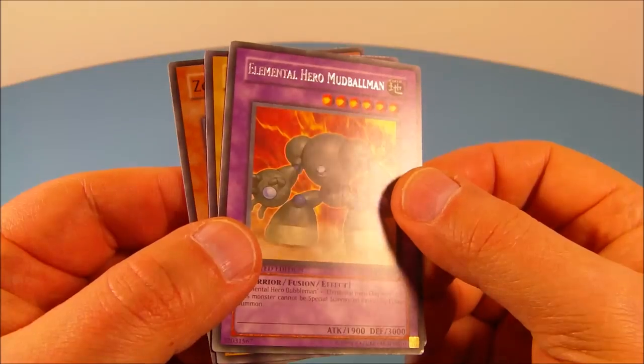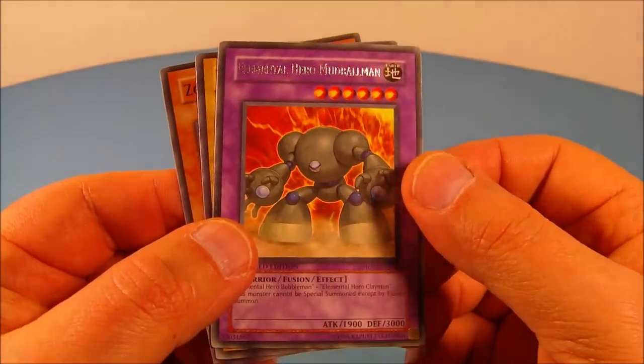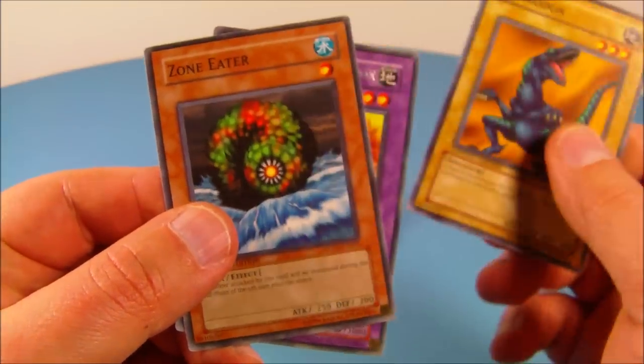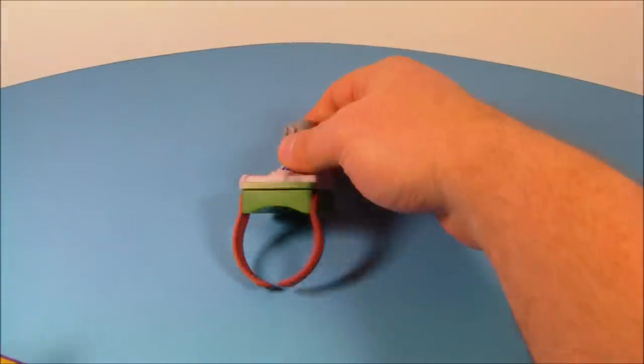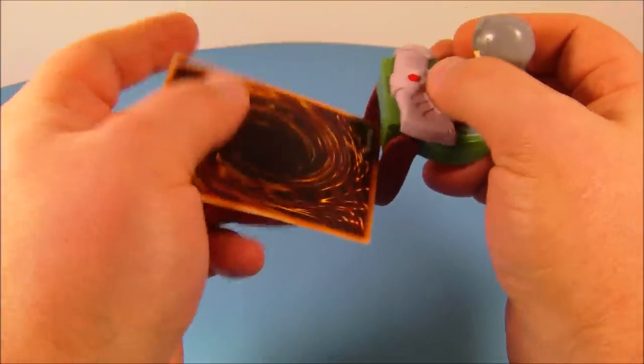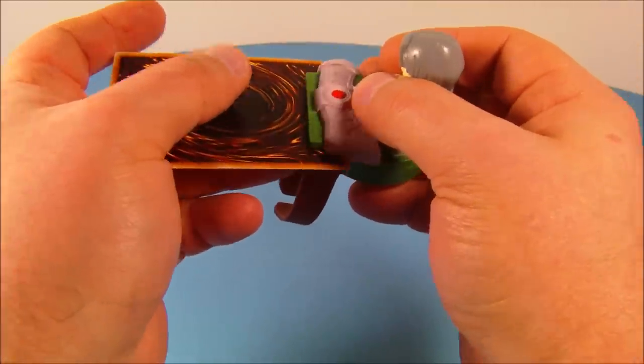And we have an Elemental Hero Mudballman. Oh that's cool. And then we have another Trachodon and a Zone Eater. Very nice. So again all you do is take one of the cards. Plug it in. Lock it into place. And get it locked in there. Just like that. Push the blue button. Awesome.